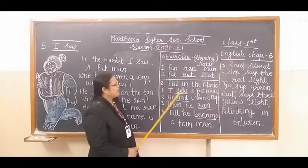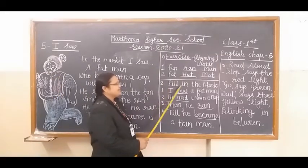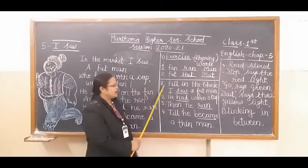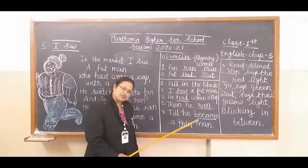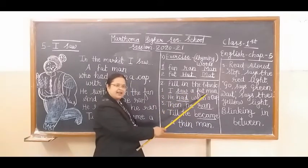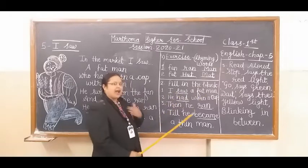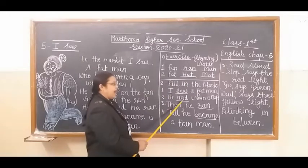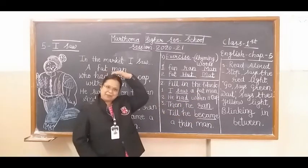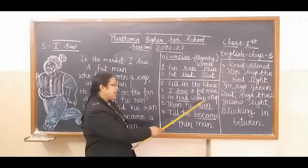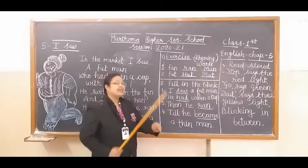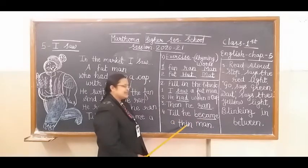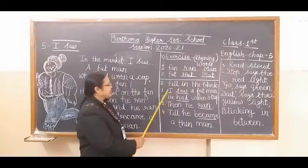Now we will do another exercise that is fill in the blanks of this poem. You can write this exercise in your copy too. I saw a fat man. I saw, I saw a fat man. He had worn a cap. He had worn a cap. Then he ran. Till he became a thin man.